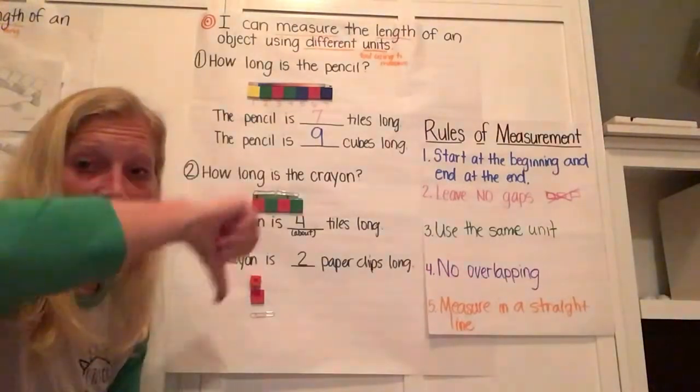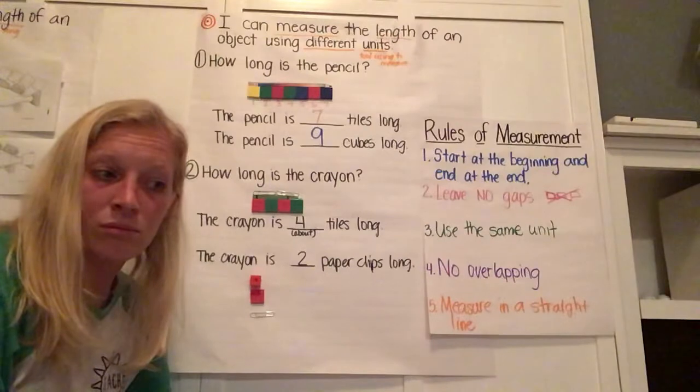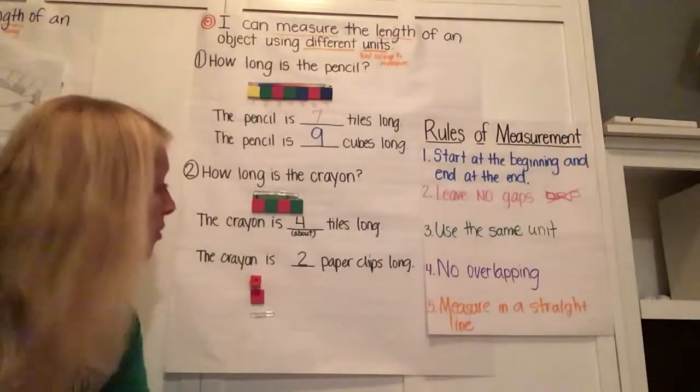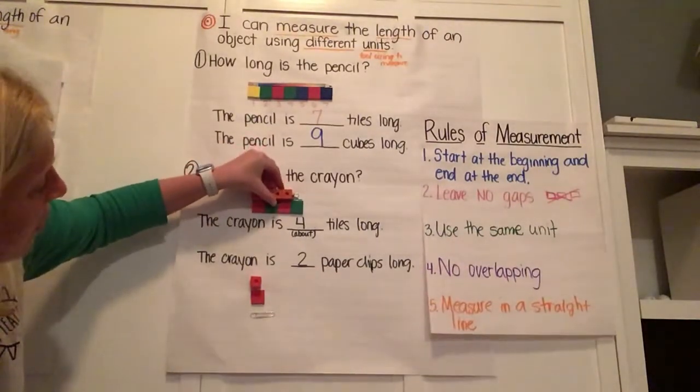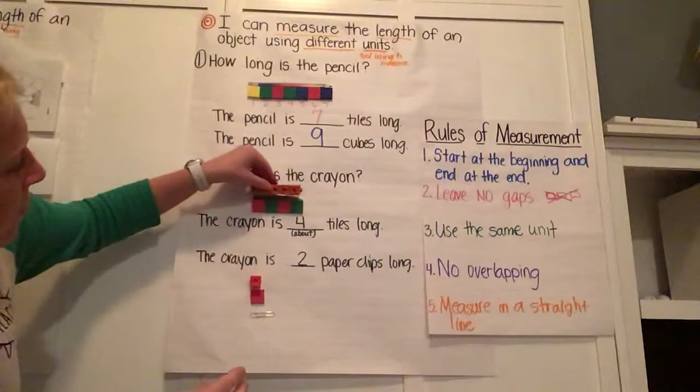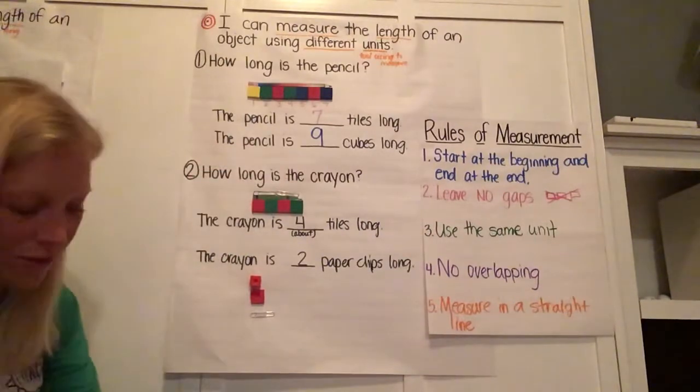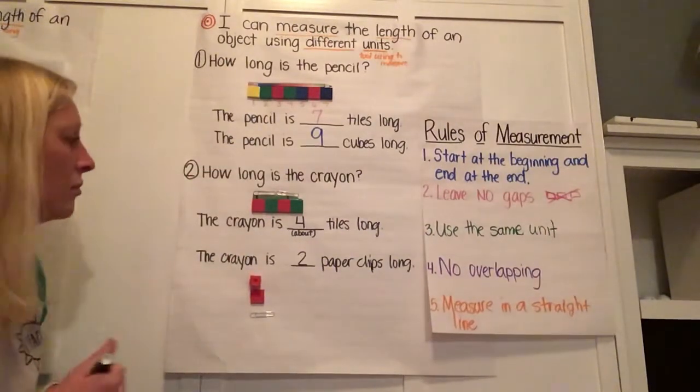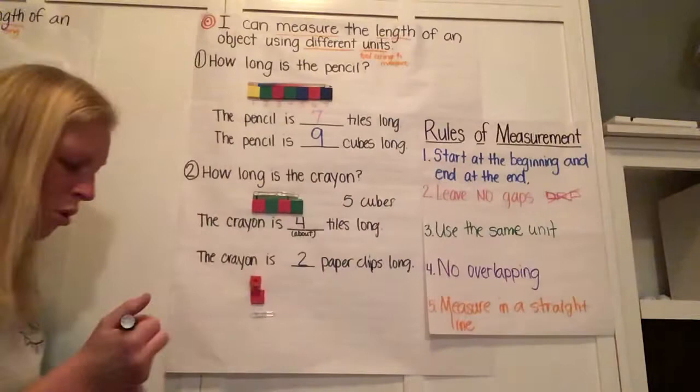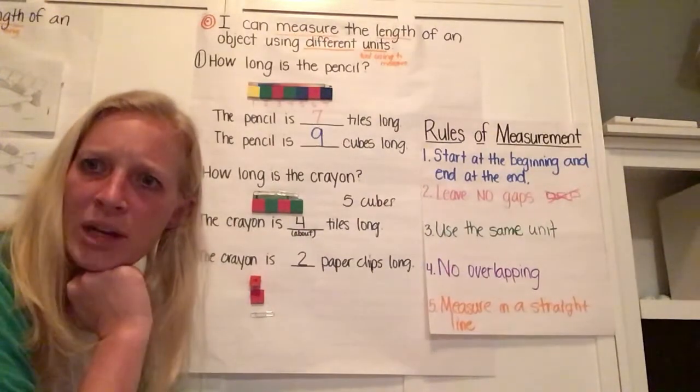Let's make a prediction. More cubes, or less cubes, to measure our crayon? Why do we think there might be more cubes? Because it takes more of them? Well, four definitely does not cut the mustard, does it? What about five? So the crayon is five cubes long. Five cubes, only four tiles, and only two paper clips. I am so intrigued, my friends.